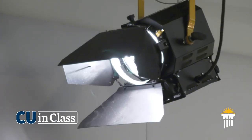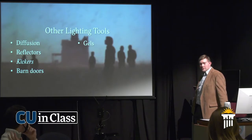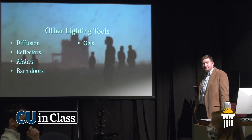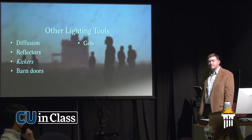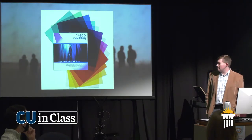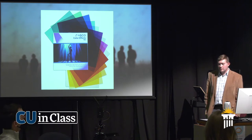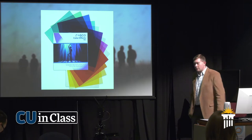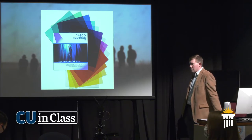Gels — what are they, and what do we use them for? You put them over the light to give the light a different color. More commonly for the light. It's like thin sheets — you place them on top of the light on the barn doors, usually using clothespins, and it gives the light a different color.